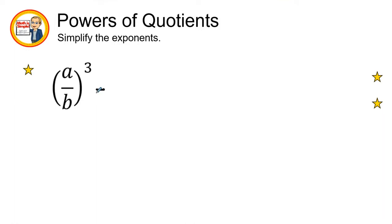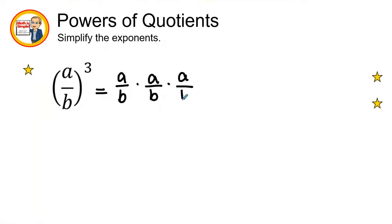When we look at this we want to put it in expanded form, so we have a over b times a over b times a over b. The exponent raised to the third power is duplicating a over b three times, so when we simplify: a times a times a is a to the third power, and b times b times b is b to the third power.